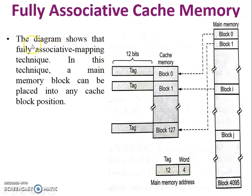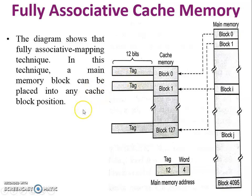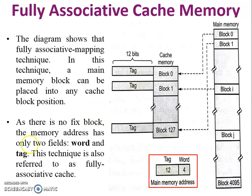This is the block diagram of fully associative mapping technique. In this technique, a main memory block can be placed into any cache block position. Block 0 can be placed in any cache position, block 1 can be placed in any cache position, so there is no restriction like in direct mapping. This technique is a flexible technique.